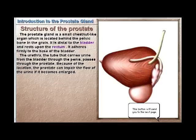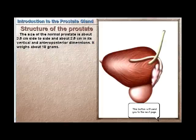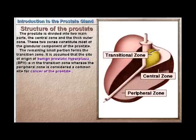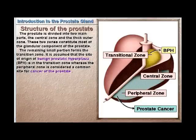Because of its location, the prostate can impair the flow of urine if it becomes enlarged. The size of the normal prostate is about 3.5 centimeters side to side and about 2.5 centimeters in its vertical and anteroposterior dimensions. It weighs about 18 grams.